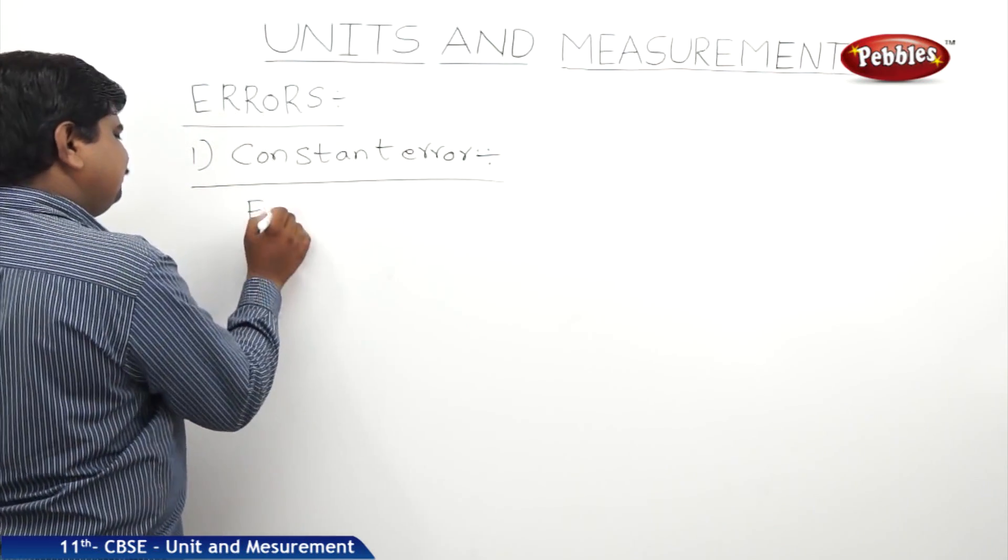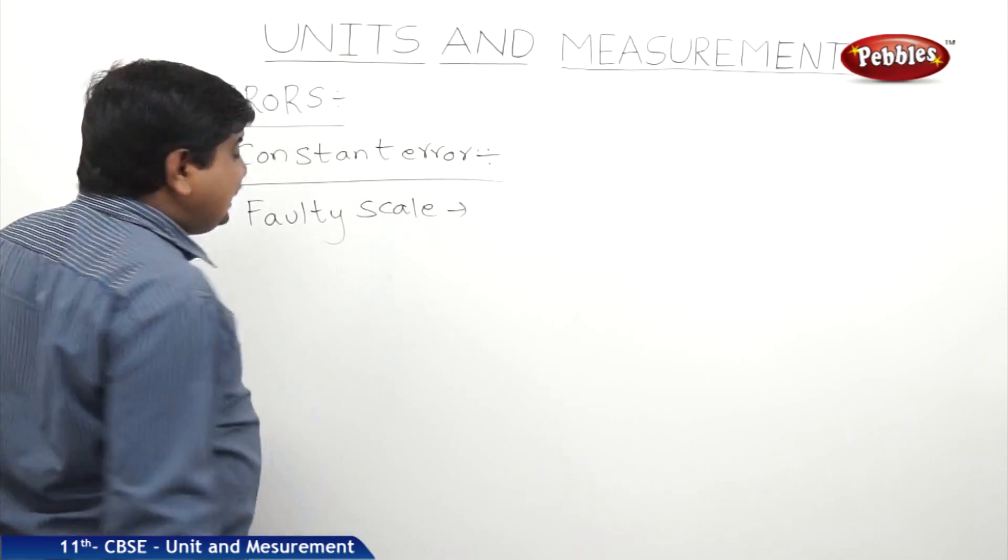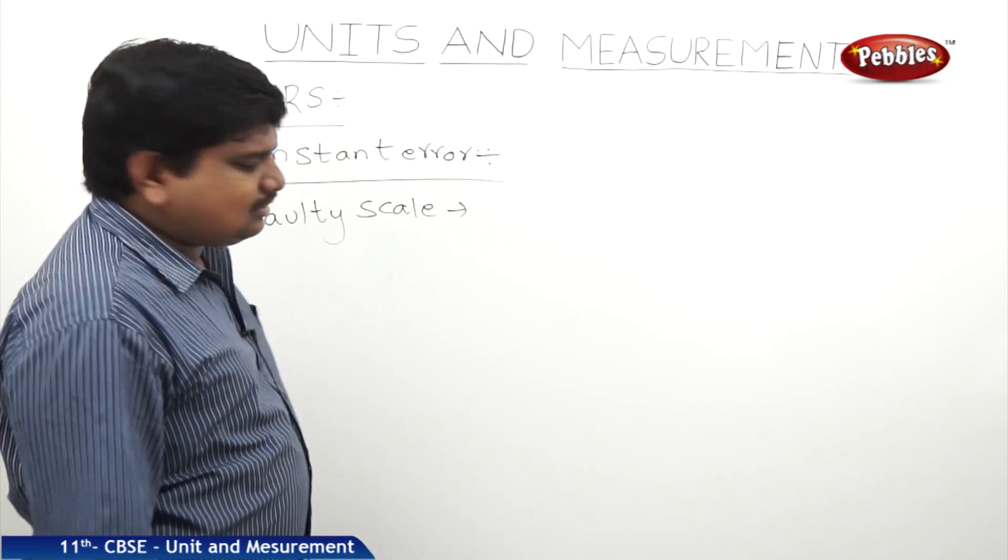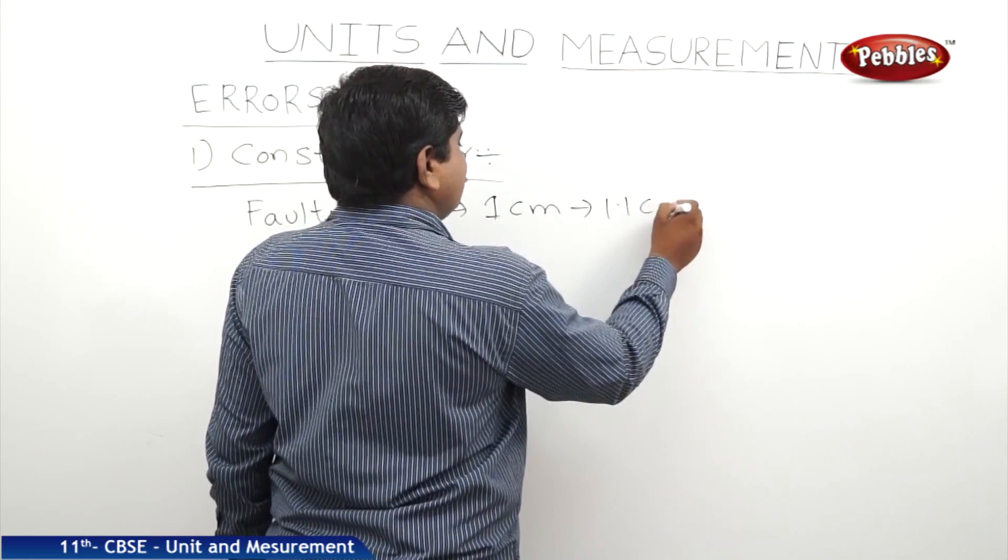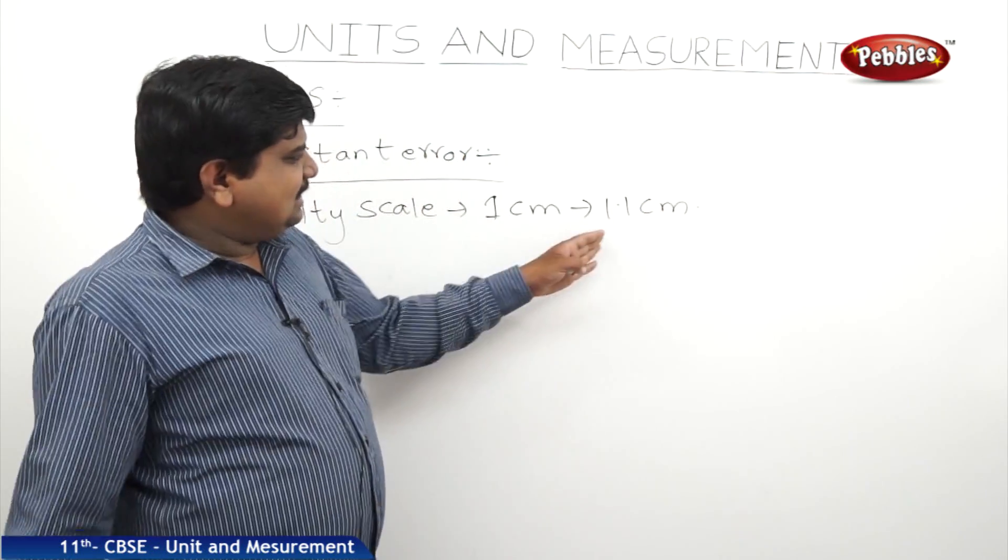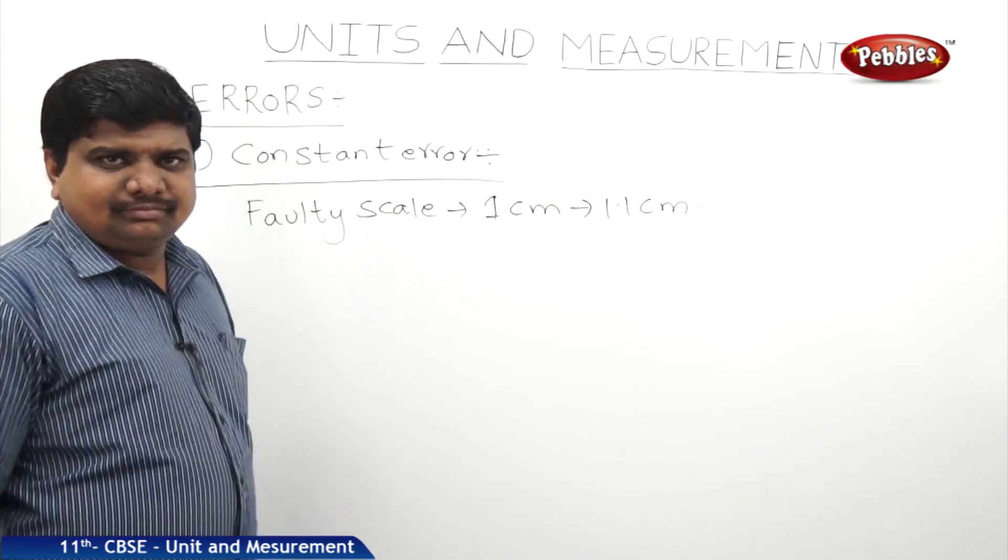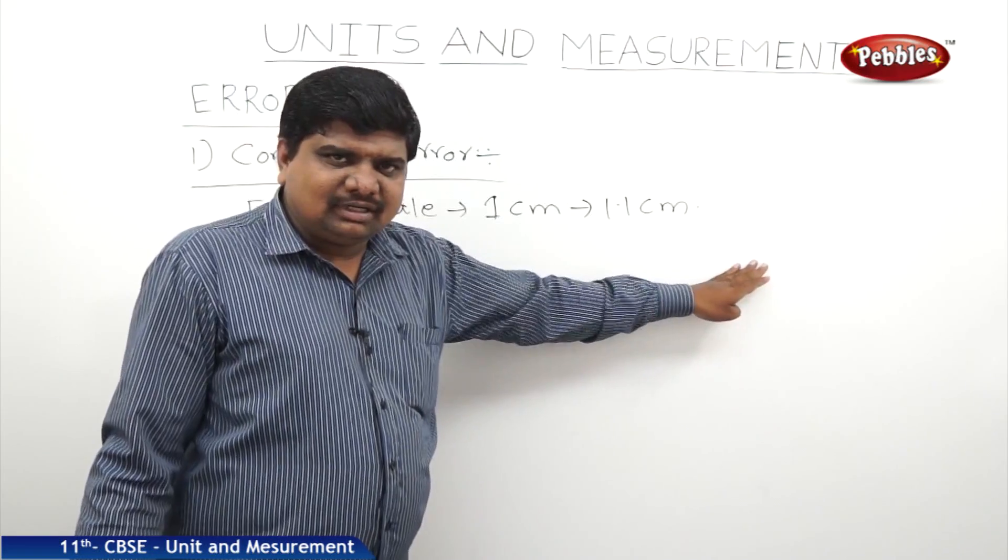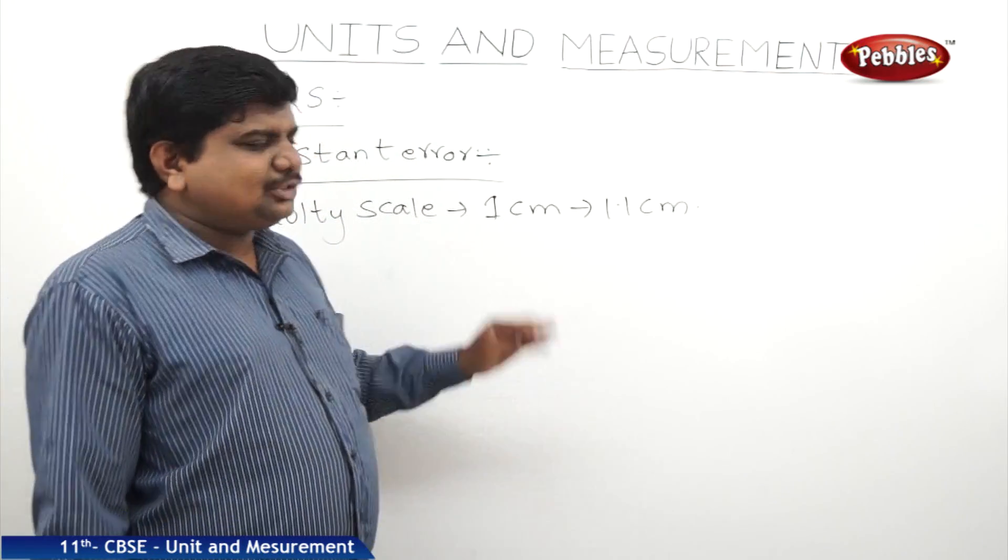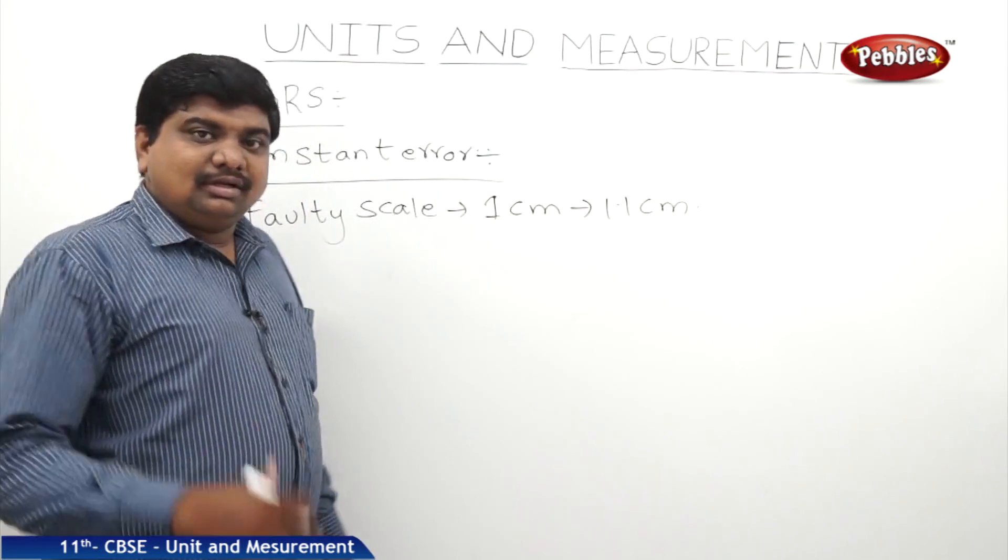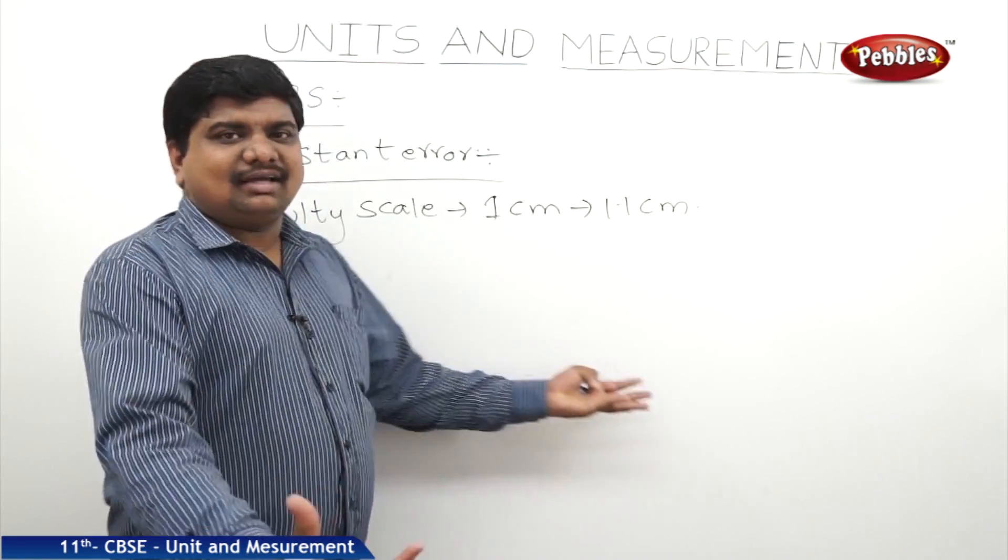Take a faulty scale, a scale which was made faulty. On this faulty scale, the length 1 cm was marked as 1.1 cm, let us suppose. Means already there is an error in measurement. The faulty scale means the scale which was manufactured with faults. So if an examiner or observer doesn't know this, without knowing, he attempted the experiment for several times. Every time he is getting wrong, but because of getting the same answer for every trial, he is thinking that is the correct answer.